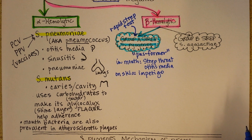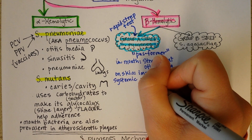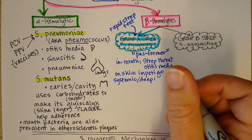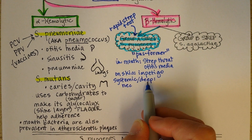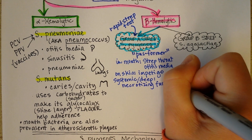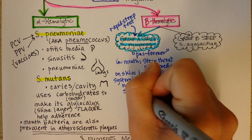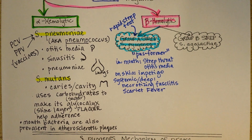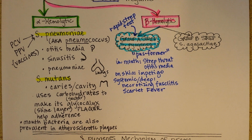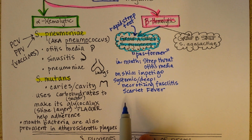Impetigo is a very painful skin rash. If it is systemic — meaning in the bloodstream and throughout different organs — or if it's deep within a tissue, we could be looking at necrotizing fasciitis, which you know as the flesh-eating disease, or scarlet fever. Scarlet fever is believed to be the infection that Helen Keller had that left her blind and deaf, though another theory is that she had some kind of meningitis.